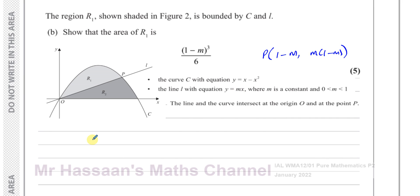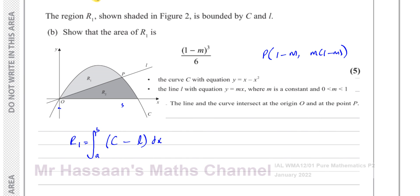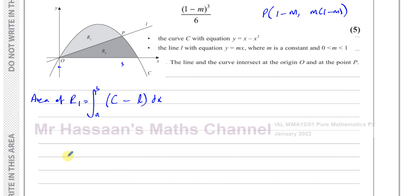To find the area enclosed by two functions, we integrate between the points where they intersect — the limits a and b. It's always better to take the function above the other in the region of interest. Here the curve is above the line, so we integrate the equation of the curve minus the equation of the line with respect to x. That gives the area of R1.